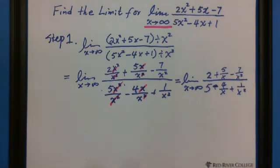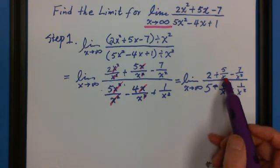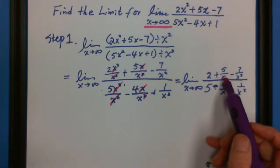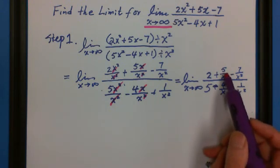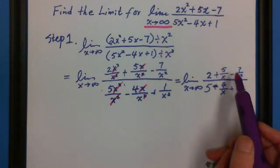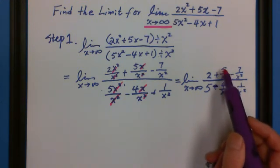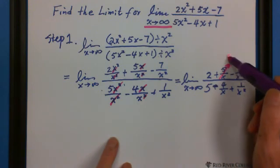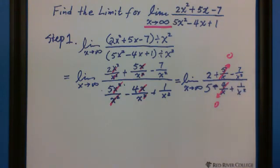Then we consider when x approaches to infinity. For example, x is a very huge number like a thousand or a million. What is 5 over x? The top doesn't matter. The number is 5 over x or 4 over x. As long as the bottom approaches to a huge number, the total fraction we say approaches to zero, right? Approach to zero. Because it's 5 over 1 million. It's a very small, very tiny number. We can approach to zero.